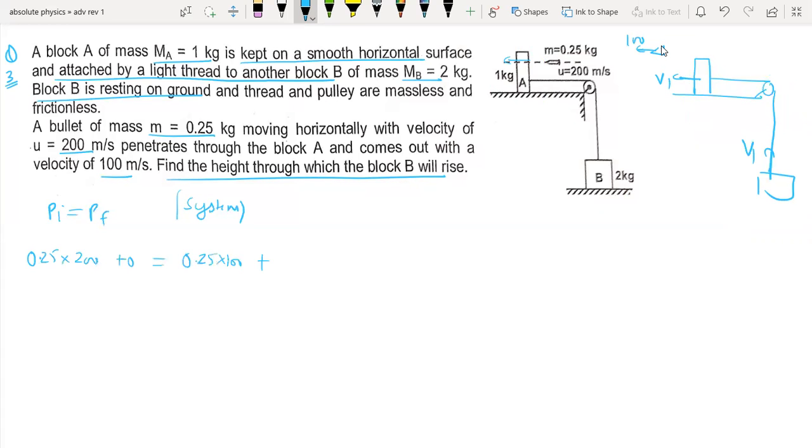Plus the block, this is equal to 1 times v1. The interaction with the block means the velocity is 25 upon 2. This will be 25 upon 3, so we get v1.